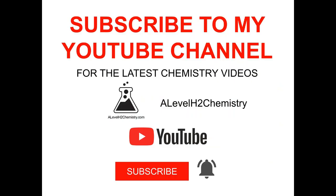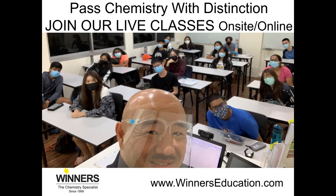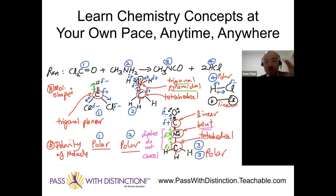If you'd like to watch more videos, click the subscribe button and the bell for instant notifications. To join live chemistry classes and revision workshops, visit winnerseducation.com to find out how to score distinction in chemistry — available at our center or online via Zoom. You can also check out the online school at passwithdistinction.teachable.com to learn chemistry at your own pace. This is Sean Choa from Winner's Education.